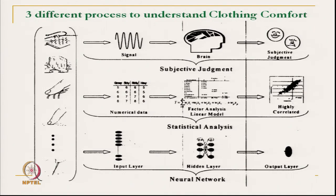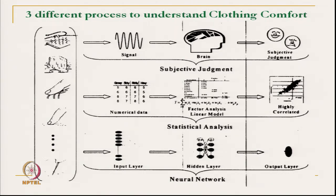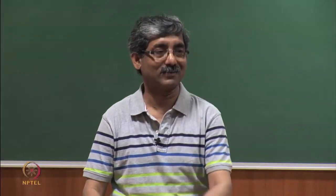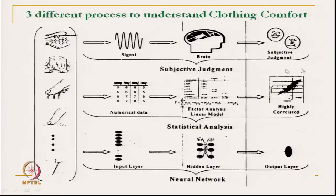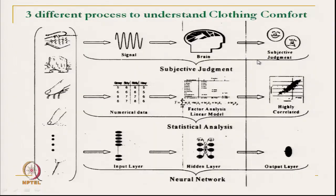Next is statistical analysis. We get a large number of data — softness, hardness, and different large numbers of data. Subjective judgment gives a single value. In the statistical technique, we actually measure different values — softness, hardness, and other things — objectively, getting a large number of data. Then we analyze the data with the subjective value, correlate the subjective judgment, and finally get a relationship correlation.